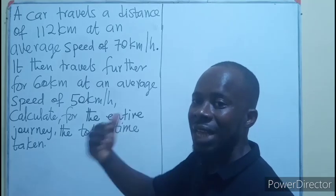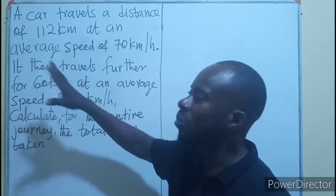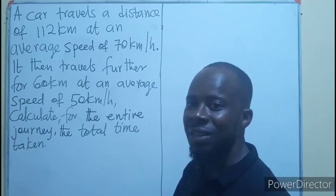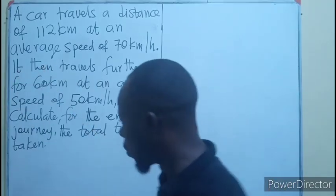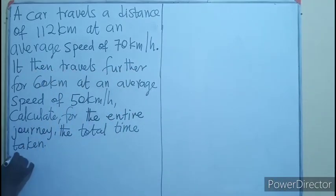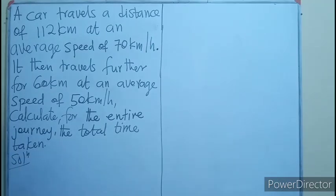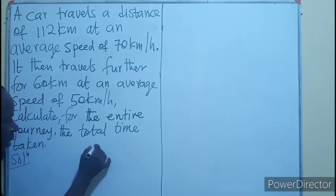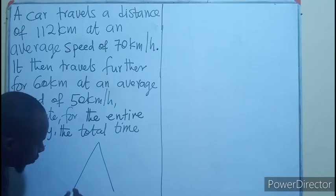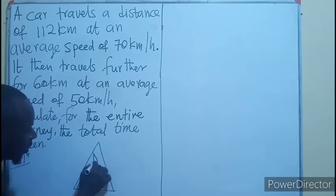We need to find the time taken for the first journey plus the time taken in the second part of the journey. We know the relation between distance, time, and speed can be derived from this triangle where we have distance, speed, and time.